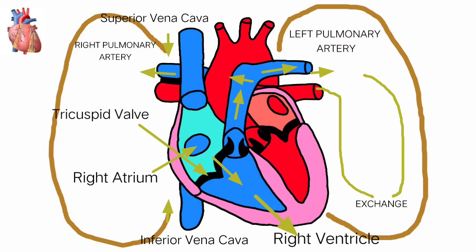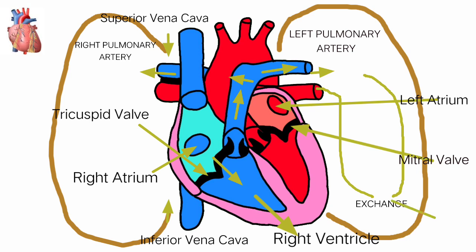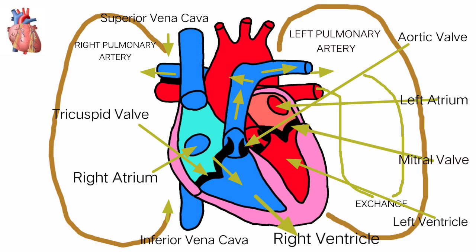Next, the blood flows down to the left atrium and through a valve called the mitral valve. After the mitral valve, the blood enters the left ventricle and passes through another valve called the aortic valve.